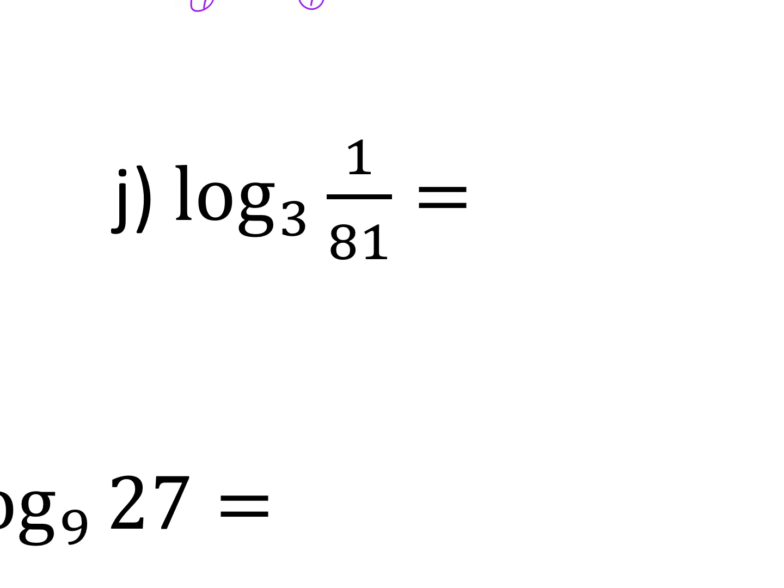Now we start to get a little fancier. 3 to what power is 1 over 81? Negative 4, right? 3 to the fourth power is 81. So if I want to flip that over, then it's 3 to the negative fourth power is 1 over 81. Just remember the negative is what flips it. So if it's 1 over something, it's going to be a negative exponent. That's what flips it over. These last two, they're tough.